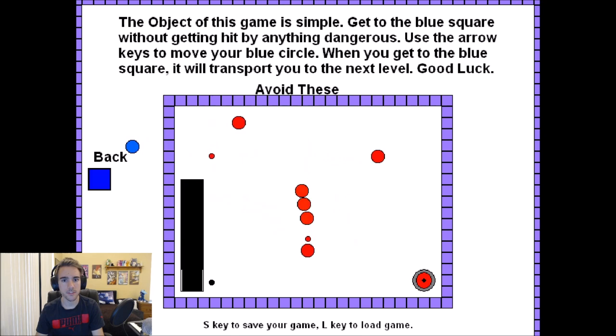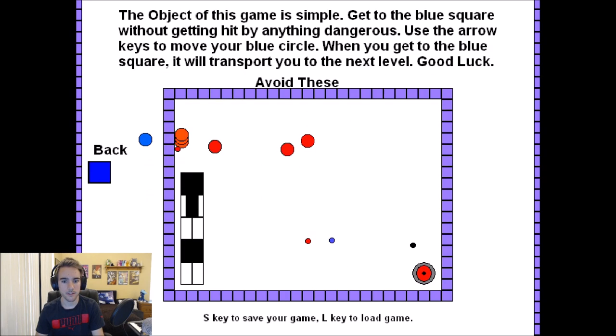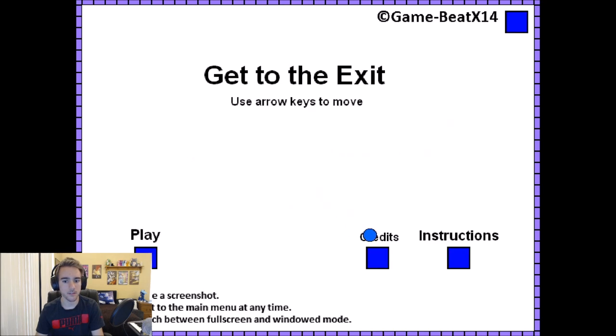The object of this game is simple. Get to the blue square without getting hit by anything dangerous. Use the arrow keys to move your blue circle. When you get to the blue square, it will transport you to the next level. Good luck. And I like how it just says avoid these. S key to save your game. L key to load. I take it these are just all the enemies in the game. Let me just look at the credits screen real quick.